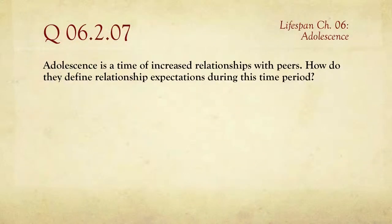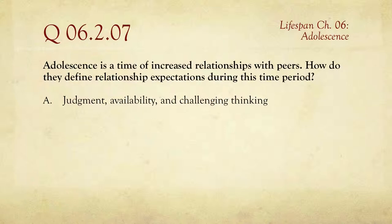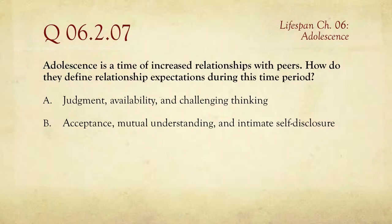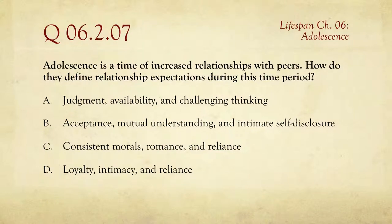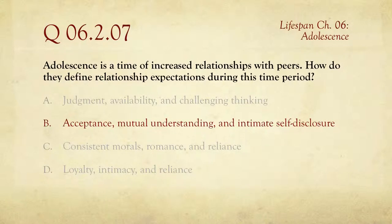Question seven: adolescence is a time of increased relationship with peers. How do they define relationship expectations during this time? The choices are: judgment, availability, and challenging thinking; acceptance, mutual understanding, and intimate self-disclosure; consistent morals, romance, and reliance; or loyalty, intimacy, and reliance. The answer is B — acceptance, mutual understanding, and intimate self-disclosure — as the things adolescents are looking for in their peer group more than anywhere else.